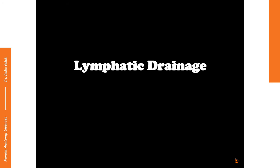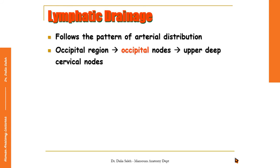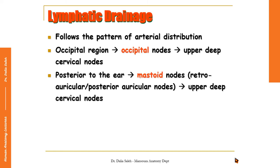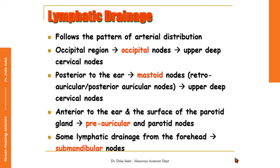For the lymphatic drainage of the scalp and face, it follows the same pattern as the arterial distribution. Lymphatic drainage from the occipital region drains into the occipital lymph nodes and from them to the upper deep cervical lymph nodes. The area of the scalp and face behind or posterior to the auricle drains into the mastoid nodes, also called retroauricular or posterior auricular lymph nodes, and from there to the upper deep cervical lymph nodes. The area of skin anterior to the ear and also the surface of the parotid gland drains into the preauricular and parotid lymph nodes. Some lymphatic drainage from the forehead goes to the submandibular lymph nodes.